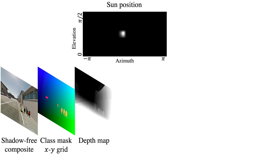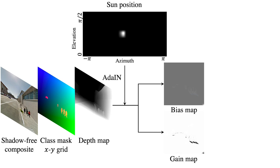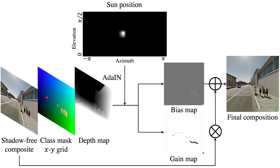The insertion network takes as input a shadow-free composite image, a class mask, a depth map, an XY grid map, and the predicted sun position distribution, and outputs a scalar gain image and a color bias image. We apply the gain and bias map to the shadow-free image to synthesize the final results with shadows.